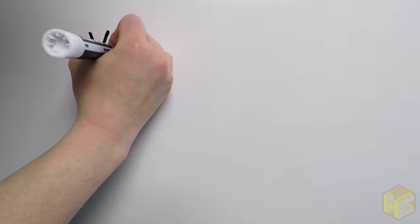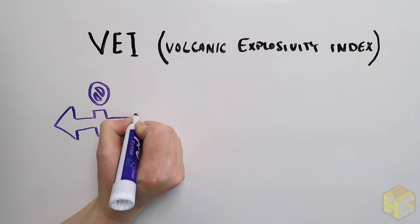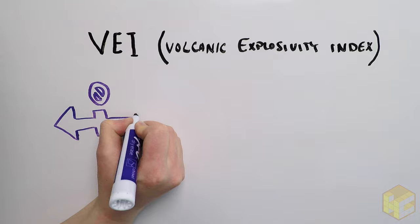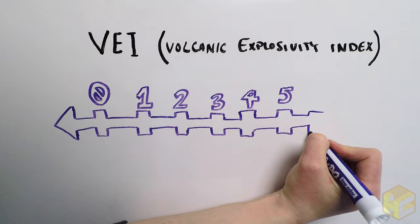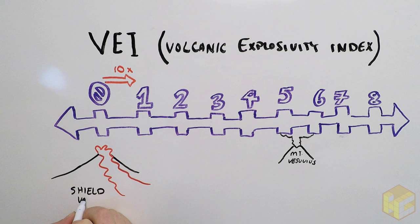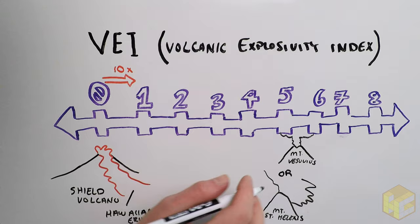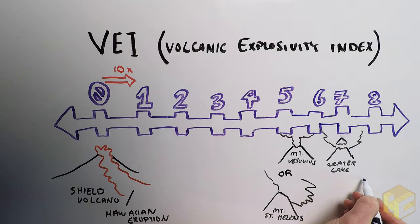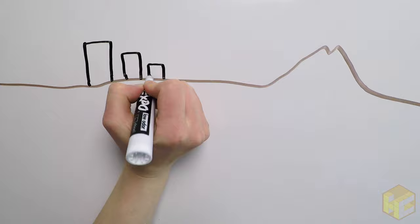The eruption in 79 AD was a 5 or 6 on the VEI scale. That's the Volcanic Explosivity Index. It's a scale we use to measure the explosivity of an eruption. It works a lot like the Richter scale. Each increased number is 10 times more powerful than the previous level. For example, a VEI of 0 is typical of shield volcanoes and Hawaiian eruptions. A VEI of 5 is a Plinian eruption, like Mt. St. Helens in 1980 or Vesuvius in 79 AD. A VEI of 7 is for mega-colossal eruptions, like the eruption of Mt. Mazama that created Crater Lake. A VEI of 8 is a supervolcano, like Yellowstone.